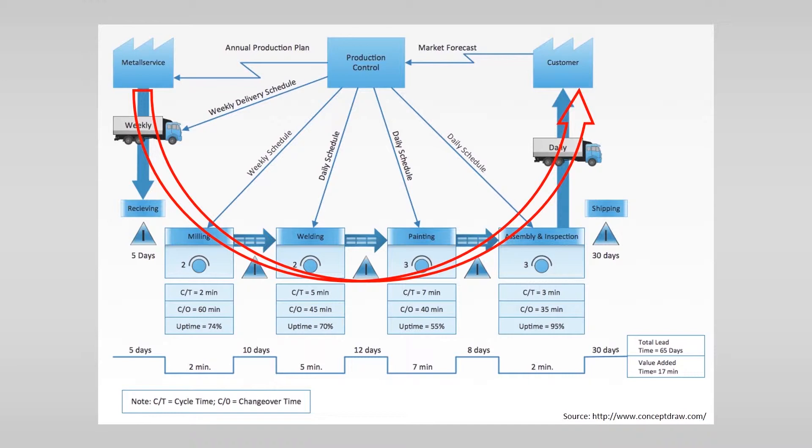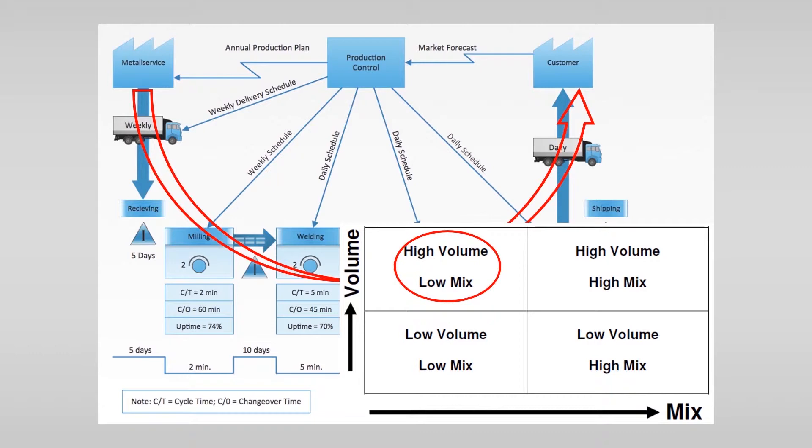Value stream mapping is originally set up for high and medium-volume environments. However, what should you map if the organization operates in a low-volume environment? Mapping a product that is not made very often may sound illogical.